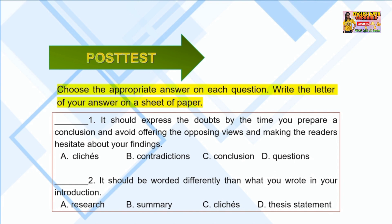Before we end, let's have a post-test to know if you really understand the lesson. Here is the instruction: choose the appropriate answer for each question. Write the letter of your answer on a sheet of paper. Number 1: It should express the doubts by the time you prepare a conclusion and avoid offering opposing views and making readers hesitate about your findings. A. Clichés, B. Contradictions, C. Conclusion, D. Questions.